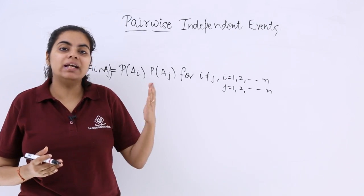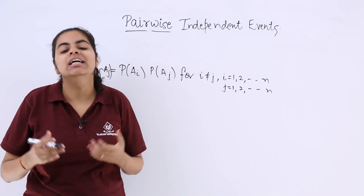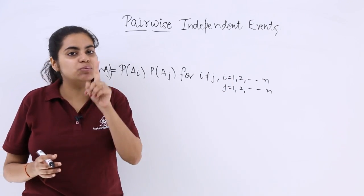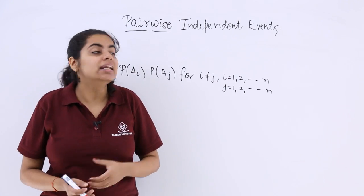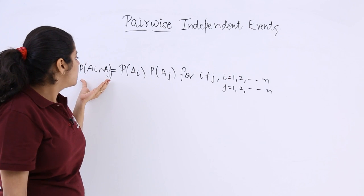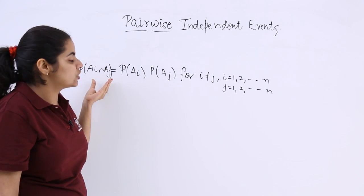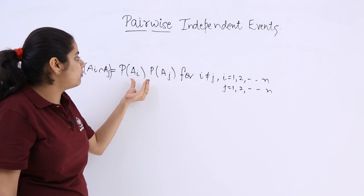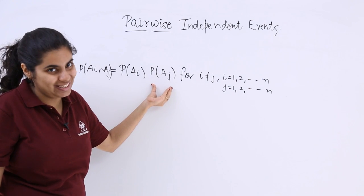If you have a1, a2, a3 up to an, different events associated with a random experiment, then pairwise independent events fall into this definition which says P of ai intersection aj is equal to P of ai multiplied by P of aj.